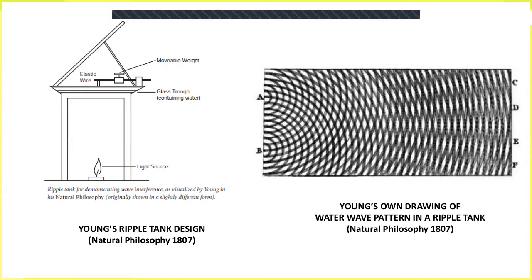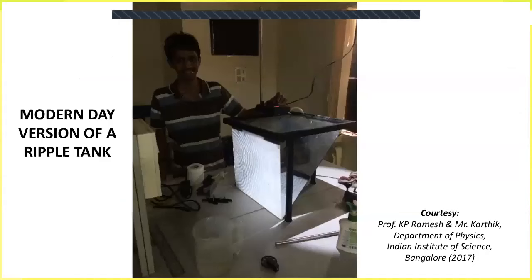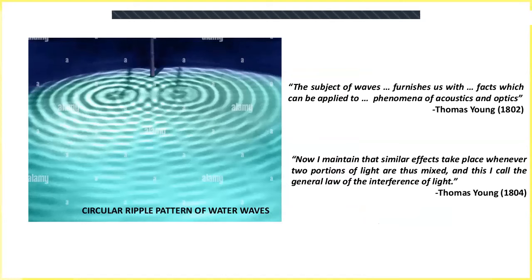This is his own hand drawing of the interference curves. This is a modern-day version of the ripple tank — a large water basin with a generator and a projection of the ripples onto a screen with the help of a light. This is a photograph of what we see in the basin: nice, beautiful circular ripples, as well as the regions of constructive and destructive interference. His study of sound and water waves together made him realize that maybe the same thing is happening in light, so he decided to get definitive proof that light exhibits interference.